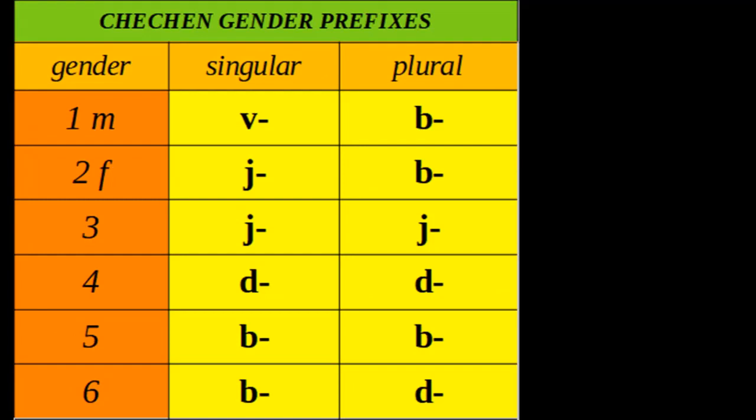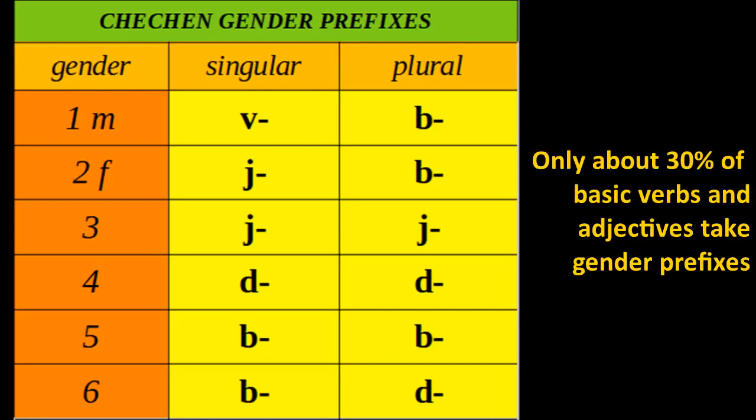These prefixes are taken by adjectives and verbs. The nouns themselves don't necessarily have any prefixes — nouns can start with any consonant. Most gender prefixes in nouns have eroded over time and disappeared. In adjectives and verbs, only about 30% take those prefixes; the remaining 70% have absolutely no prefix and therefore no gender agreement.